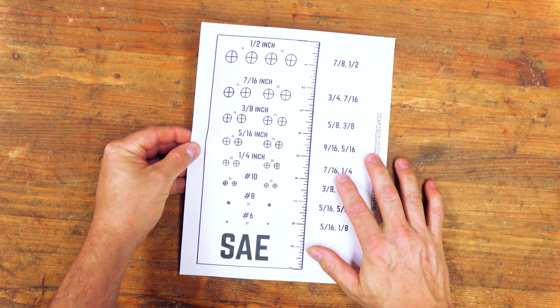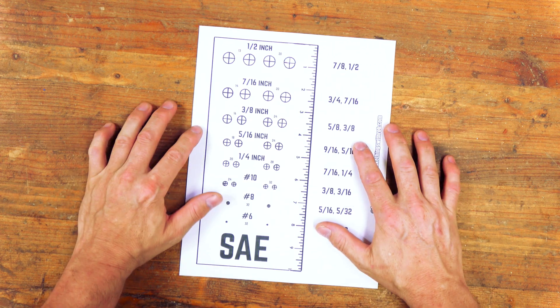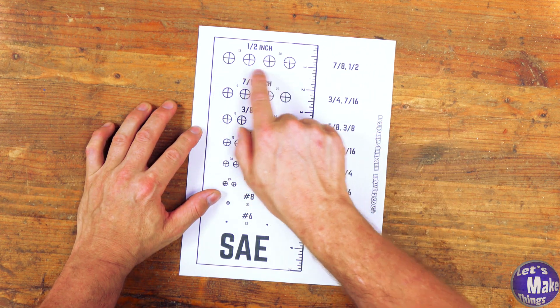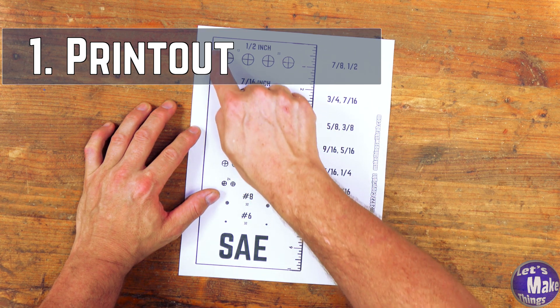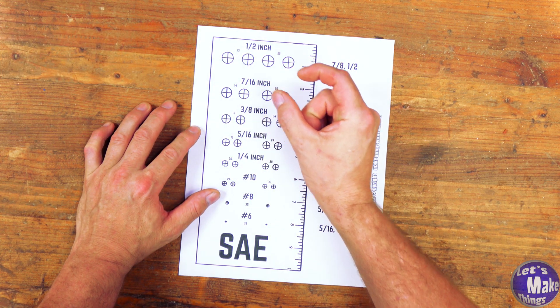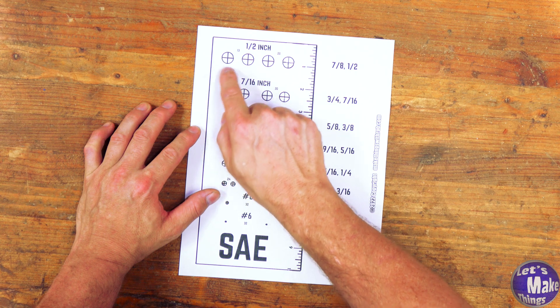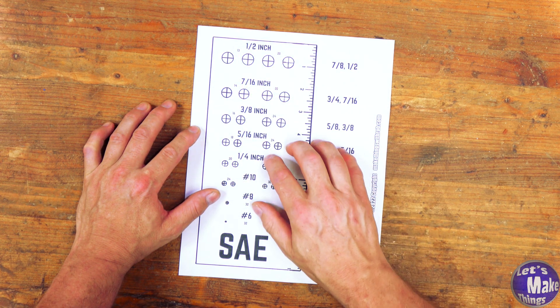On my website I have this sheet that you can print off and it works like this. There's going to be two different sizes for each one of these holes. We're going to have the outside diameter of the bolt and the nut and then the inside diameter, which is going to be whatever the identifying hole is.